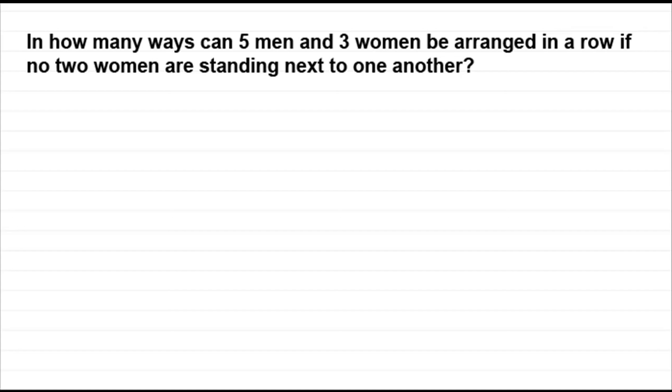The last one you might even want to try yourself based on this one. Now what we've got here is in how many ways can five men and three women be arranged in a row if no two women are standing next to one another. And to do something like this what I would suggest you do is put down some spaces.